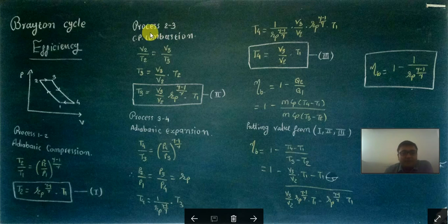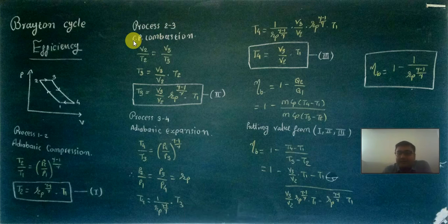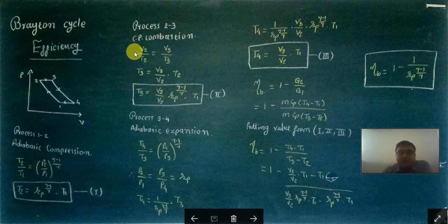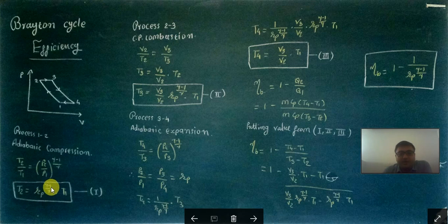The second equation comes from process 2 to 3, which is a constant pressure combustion process. For a constant pressure process, we recall: P2V2/T2 equals P3V3/T3. Since P2 equals P3, we get V2/T2 equals V3/T3, which gives T3 equals (V3/V2) into T2. Substituting T2 equals Rp raised to gamma-1 upon gamma into T1, we get T3 in terms of T1.